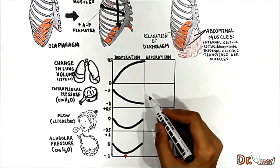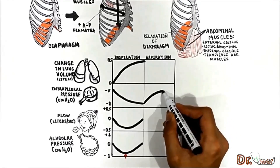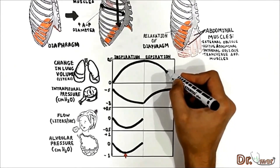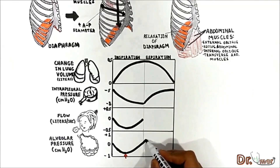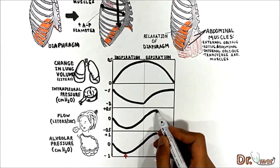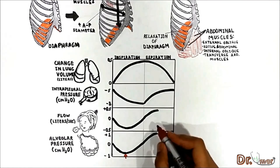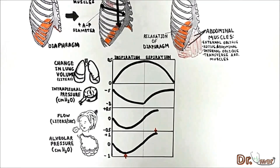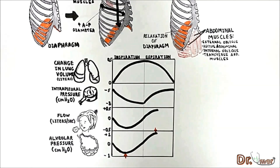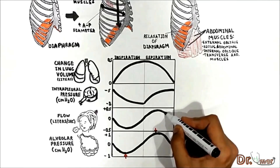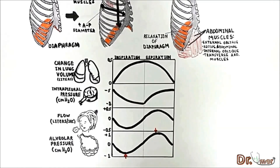During expiration, when intrapleural pressure starts rising toward minus 5 cm water, lung volume starts decreasing simultaneously. Alveolar pressure begins rising and air flows out of the lungs. When alveolar pressure reaches plus 1 cm water, there is the greatest air flow out of the lungs — this occurs at the middle of expiration. Then alveolar pressure begins falling toward zero, and air flows out of the lungs until alveolar pressure reaches zero, at which point air flow stops.